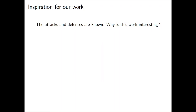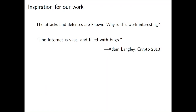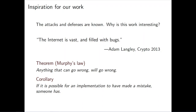So now we know about this attack and defenses that have been known for decades — so why am I up here talking about this? This can be best explained by a quote from Adam Langley in his invited talk at Crypto 2013, given in the aftermath of major TLS attacks such as CRIME and BEAST: 'The internet is vast and filled with bugs.' Murphy's theorem says anything that can go wrong will go wrong — and the computer security version is that if it's possible for an implementation to have made a mistake, then someone on the internet has done it.